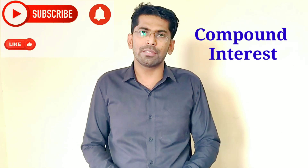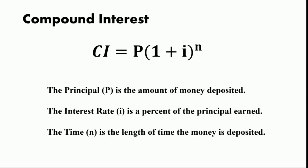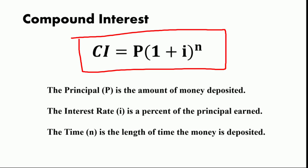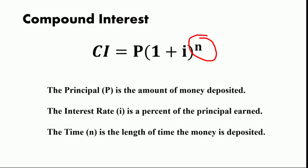Simple interest is very rarely used in real life. Almost all banks and financial institutions use compound interest. Compound interest is calculated on the principal amount plus any accumulated interest accrued at the start of each period — meaning interest is charged on interest. The formula for compound interest is: FV = P × (1 + I)^n, where P is the principal, I is the rate of interest, and n is the time period.